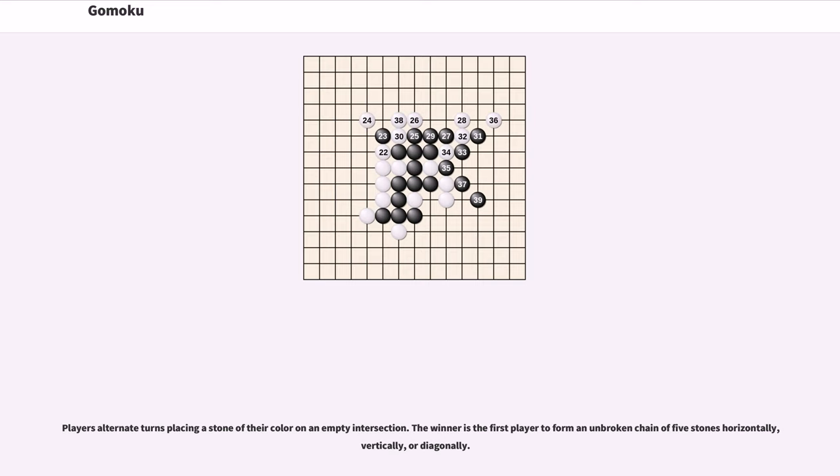Players alternate turns placing a stone of their color on an empty intersection. The winner is the first player to form an unbroken chain of five stones horizontally, vertically, or diagonally.